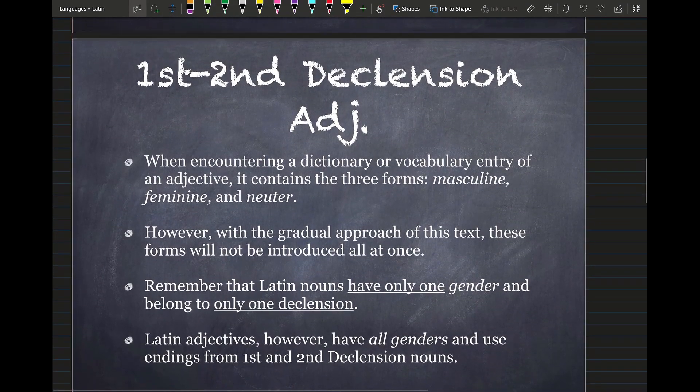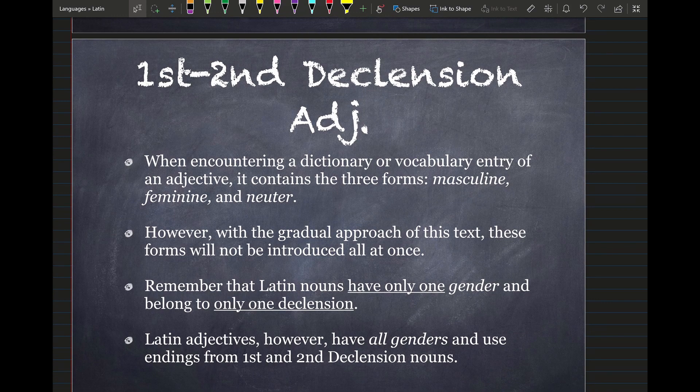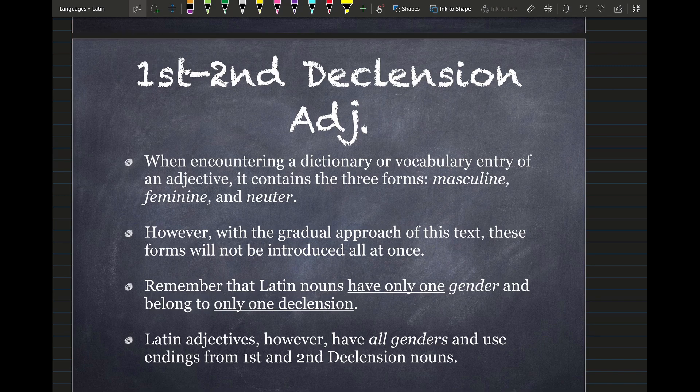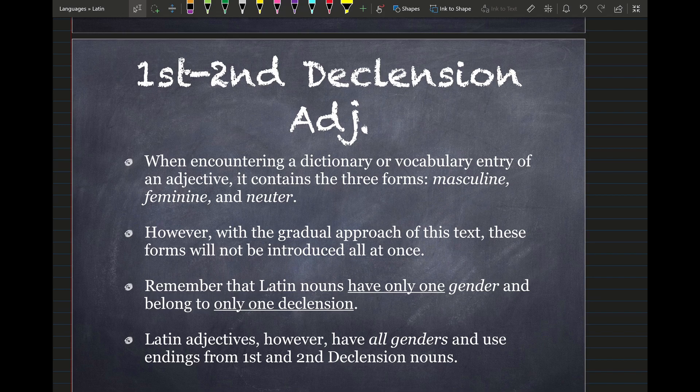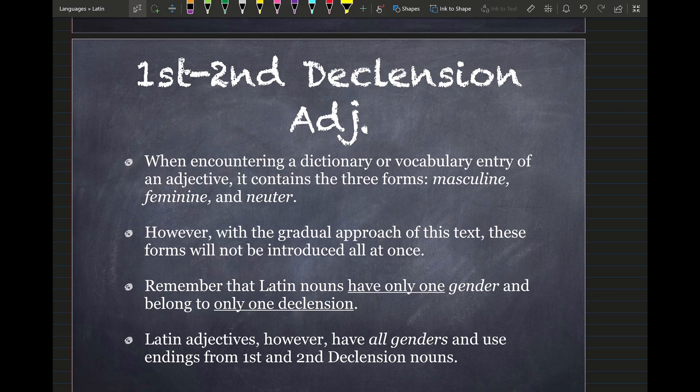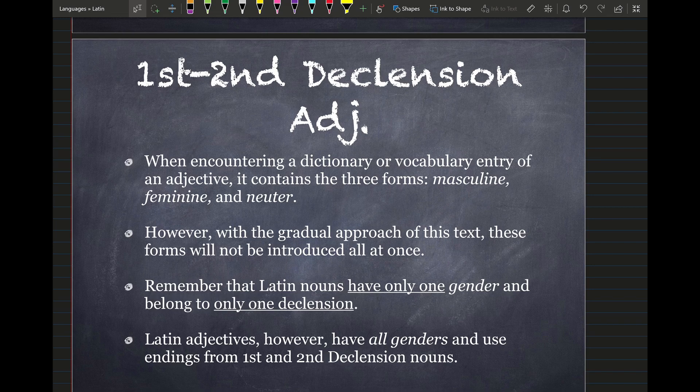Continuing on. When we encounter a noun in a dictionary or a vocabulary list or anything like that that I provide you, an adjective contains three forms. It has a masculine form, a feminine form, and a neuter form. With the gradual approach of this text, these forms will not be introduced all at once. So we're only going to see a few of them. And eventually we'll get to the point where we can decline a whole chart of adjectives. And once we've gone through the first seven chapters, we'll be able to do that. And you'll see it's very easy with the approach that this book uses to introduce case systems over time.